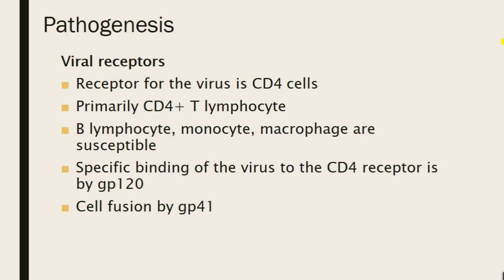Moving on to the pathogenesis of HIV virus. The receptor for HIV virus is mainly CD4 cells in the human body, primarily CD4-positive T lymphocytes. B lymphocytes, monocytes, and macrophages are also susceptible to infection with HIV. Specific binding of the virus to the CD4 receptor is by GP120, which is the envelope glycoprotein. Cell fusion occurs by the transmembrane pedicle glycoprotein GP41.